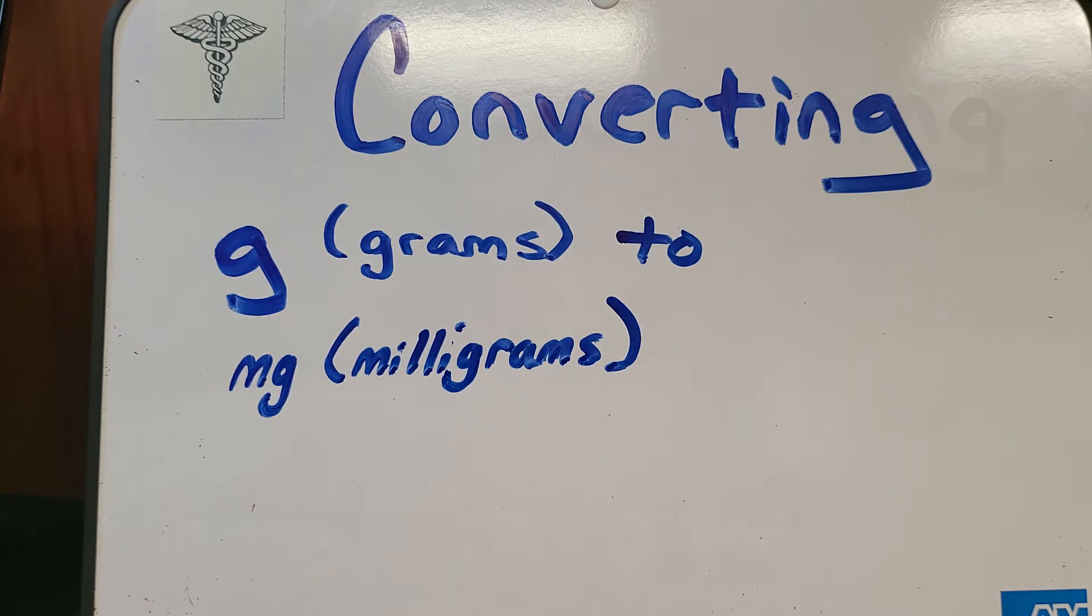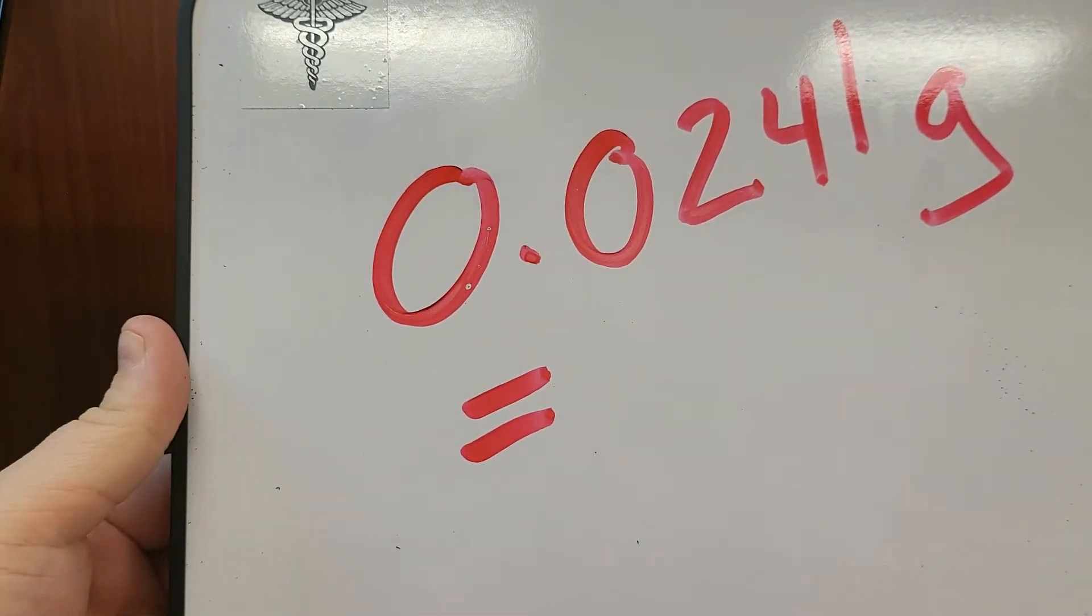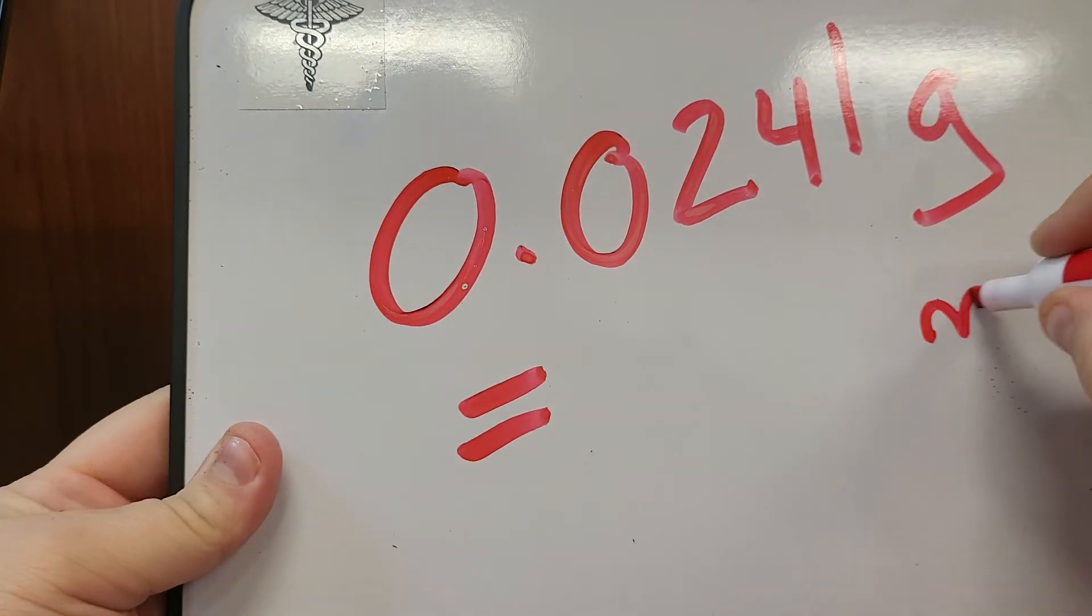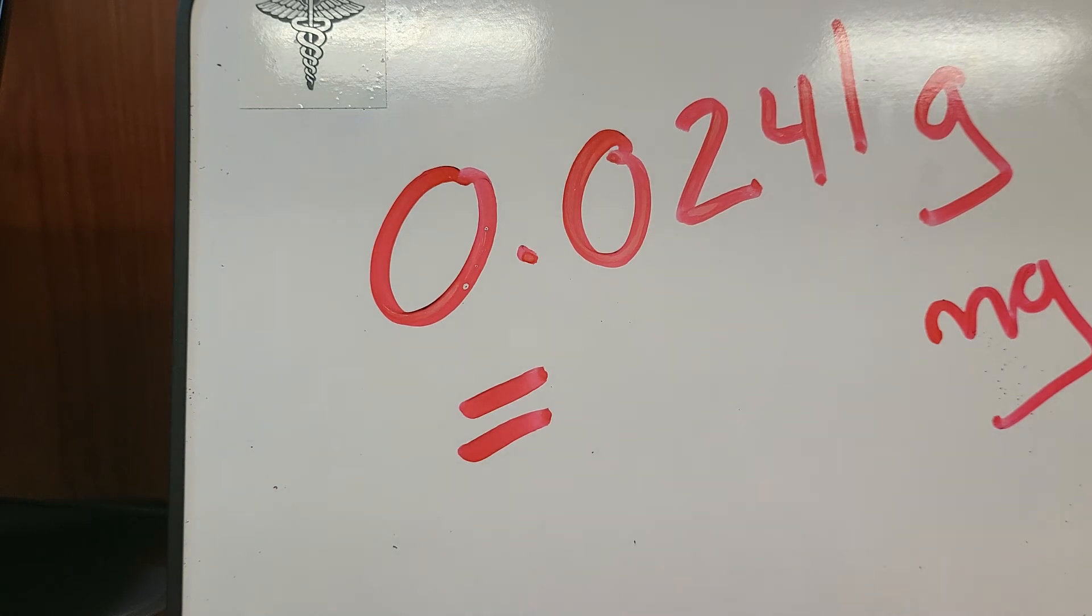Here's an example. Alright, so what we got here is 0.0241 grams. And how are we going to express this in milligrams? You guessed it, we are going to use the rule of decimals.